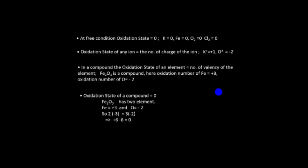Rule number four: the oxidation number of a compound overall equals zero. For example, in iron(III) oxide, iron is plus three and there are two atoms: two multiplied by plus three gives plus six. Oxygen is minus two and there are three atoms: three multiplied by minus two gives minus six. Plus six and minus six cancel out to give zero. Overall the compound has no charge, so zero.